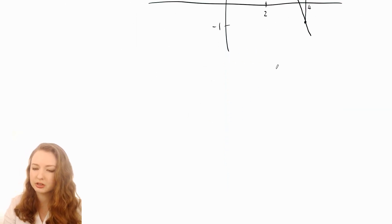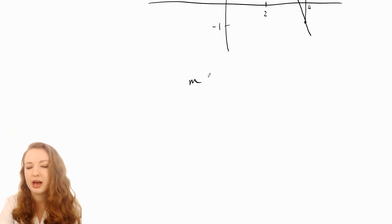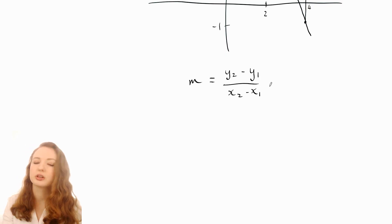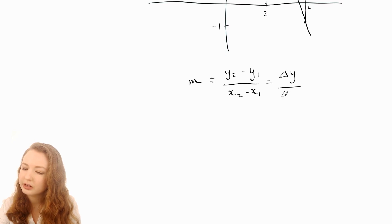You'll often see slope written as y₂ minus y₁ over x₂ minus x₁. That's the official formula for slope. But the way I like to think about it is that it's just the change in y—that's the delta symbol often used for change—divided by the change in x. That's really just another way of saying rise over run.